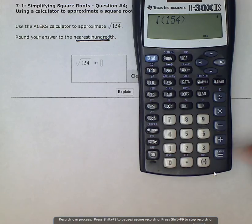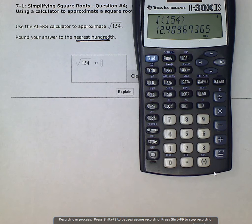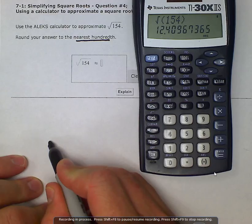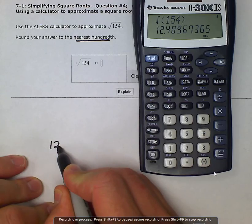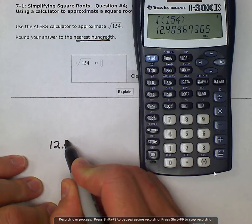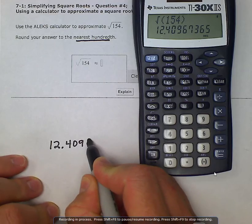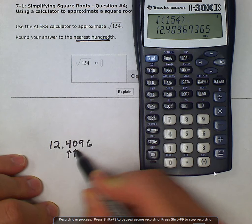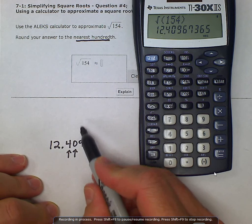And then it is going to give us a decimal, and it is asking us, this problem is asking us to round it to the nearest hundredth. The hundredth is the second digit after the decimal, so we have our tenth, we have our hundredth.